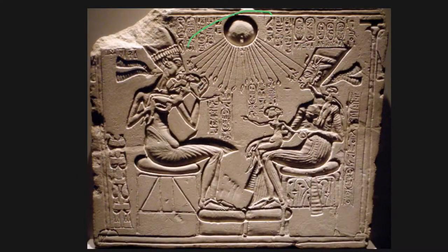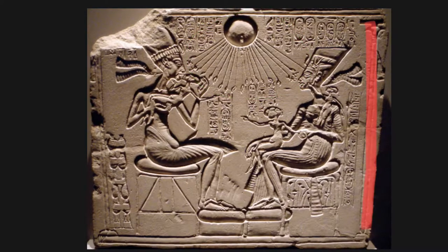Bouncing back to the new style Akhenaten introduced, we can see specific imagery related to him, his family, and his reign. Some of his imagery includes the sunbeams reaching out to the family and holding the ankh, which is a symbol of life. This artwork also depicts papyrus leaves, hieroglyphs, and curvilinear human figures.